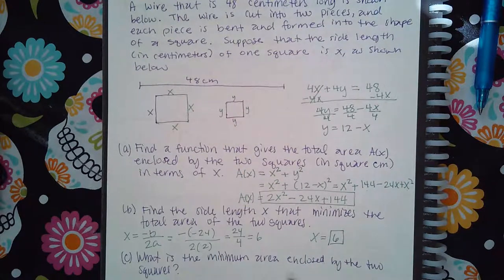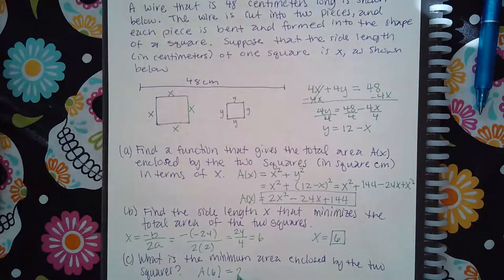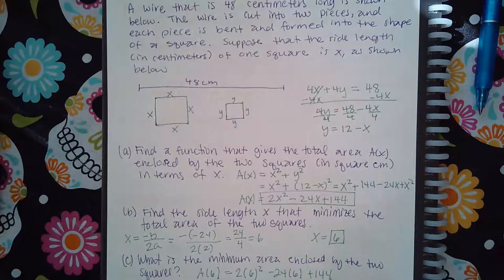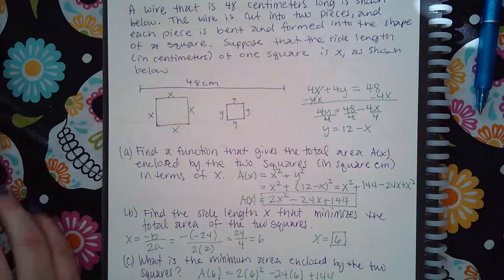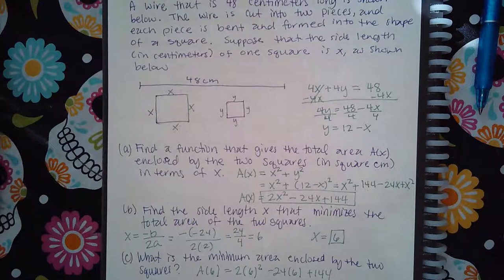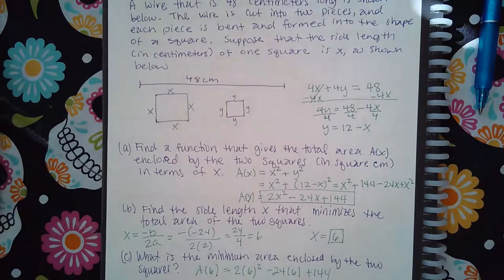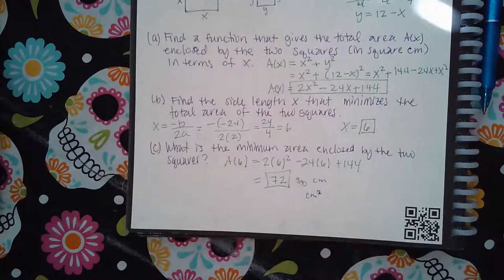For the minimum area, plug x = 6 into the area function: 2(6)² − 24(6) + 144 = 72. The minimum area is 72 square centimeters.